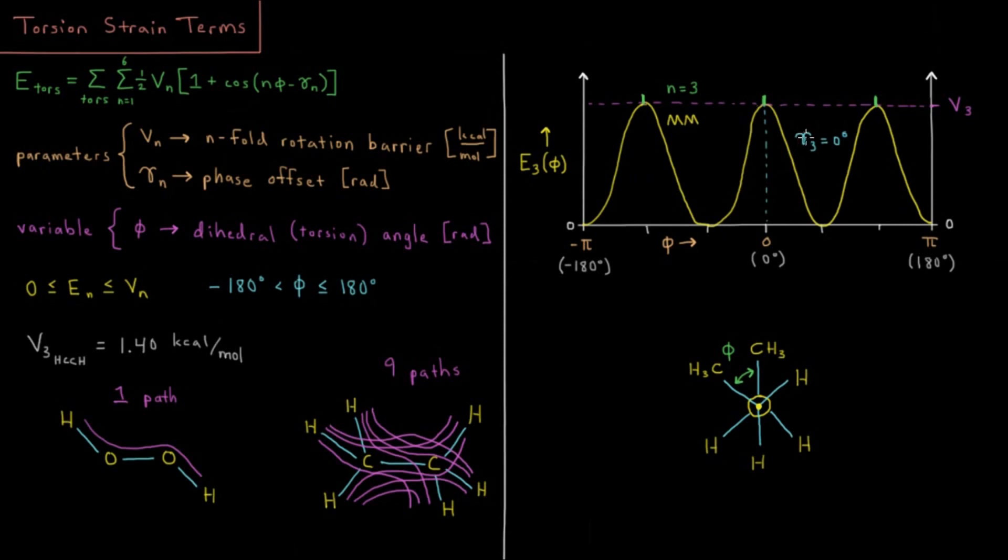Here the gamma, the offset, is zero degrees. So the maximum appears at zero and our variable as we change here, we go from low energy staggered to high energy eclipsed, low energy staggered, high energy eclipsed, et cetera.